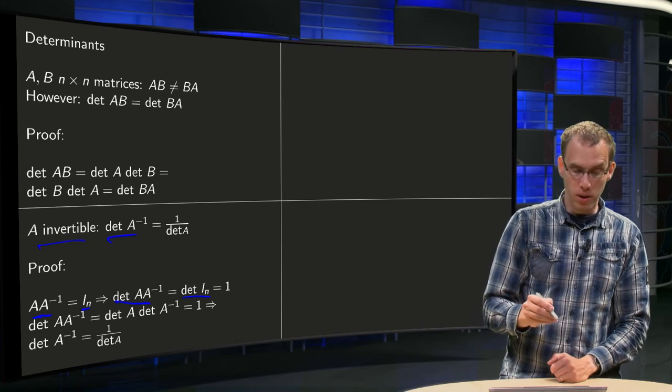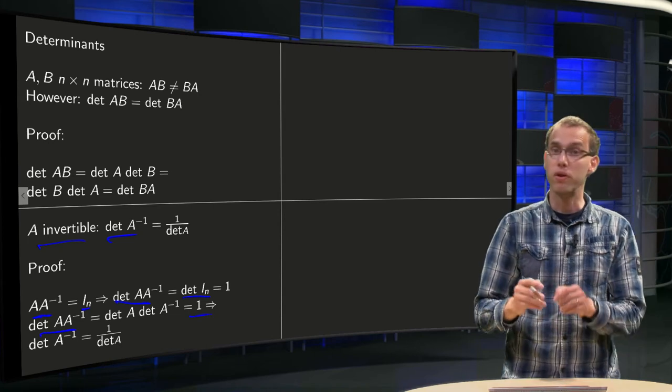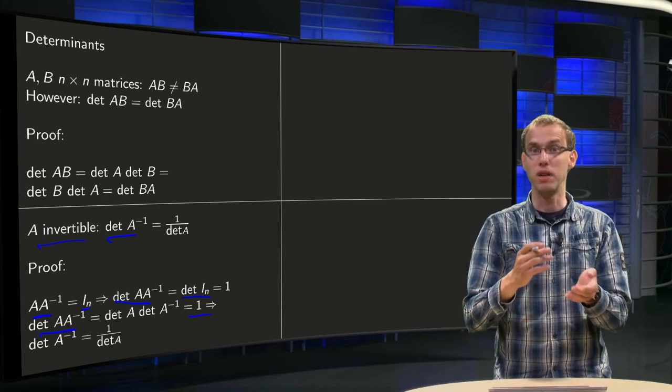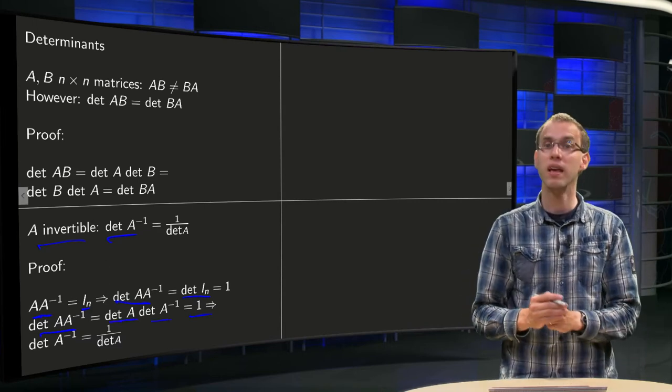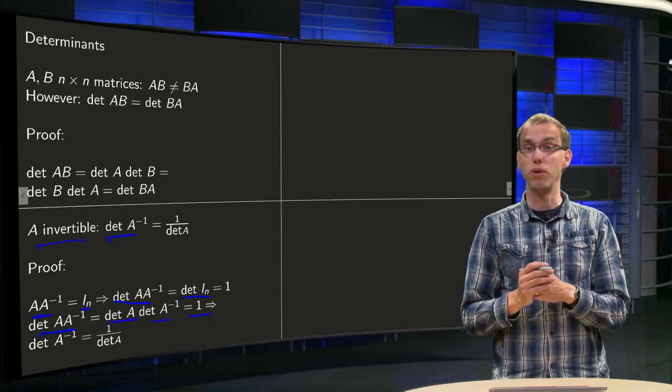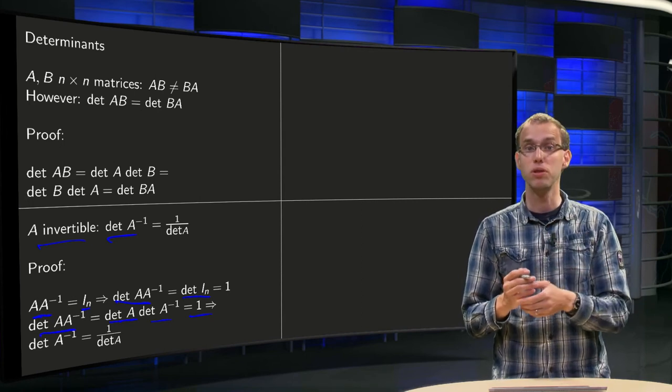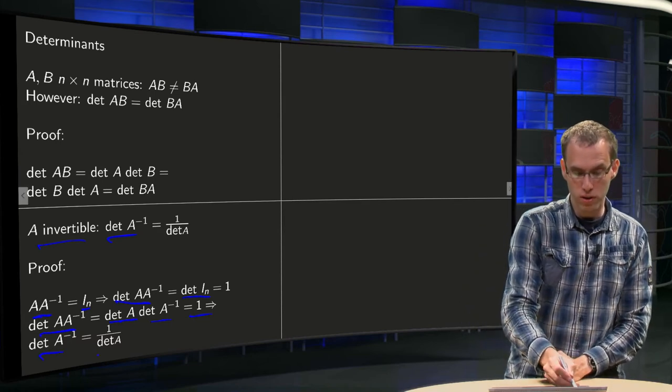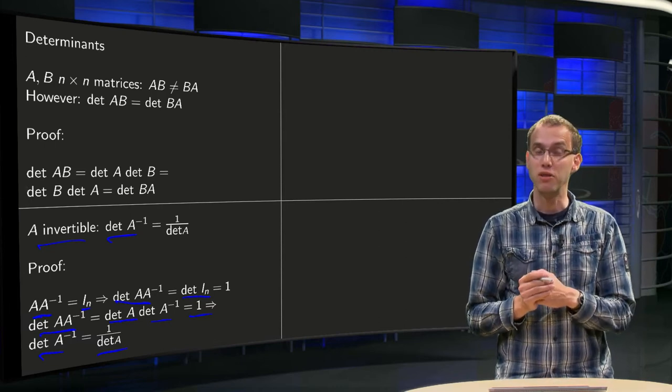So now we know that the determinant of A times A inverse equals 1, but we can split it up again as we did in the previous proof. Det A times A inverse equals det A times det A inverse, which we will do over here. And then we can solve for the determinant of A inverse because A is invertible, so det A is not equal to 0, so we can divide by it. So det A inverse equals 1 over the determinant of A, which was what we had to show.